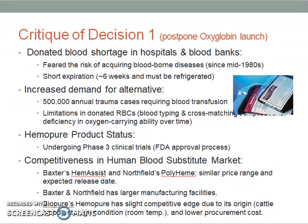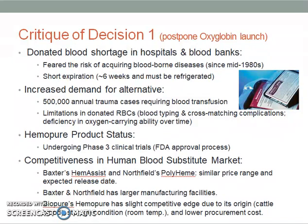There were also limitations in donated red blood cells due to blood typing and cross-matching complications, as well as a deficiency in the oxygen-carrying ability of red blood cells over time. When looking at Humapure's product status, it was still undergoing Phase III clinical trials under the FDA-approved process. There were two potential competitors in the human blood substitute market: Baxter International and Northfield Laboratory, both proposing similar price ranges and expected release dates. While Baxter and Northfield had larger manufacturing facilities, BioPure's Humapure had a slight competitive edge due to its origin from cattle blood, its convenient storage conditions, and lower procurement cost.